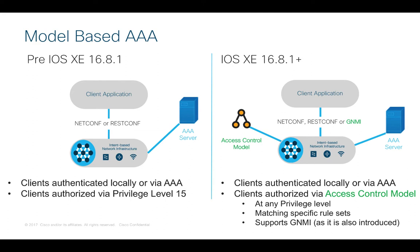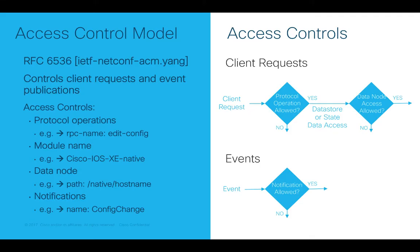We want to restrict contractors to particular operations, like configuring devices or running show commands. We can implement this with model-based authorization — we can set rules for different privilege levels, and using protocols like RADIUS or locally configured, we can assign those contractors to a privilege level. Once we set the rules for that privilege level, the contractor has access only to those rules. It is like a group-based authorization scheme for data and operations modeled in YANG.